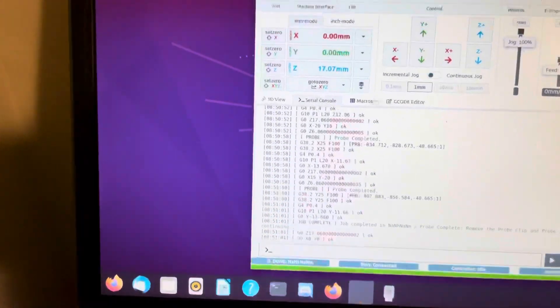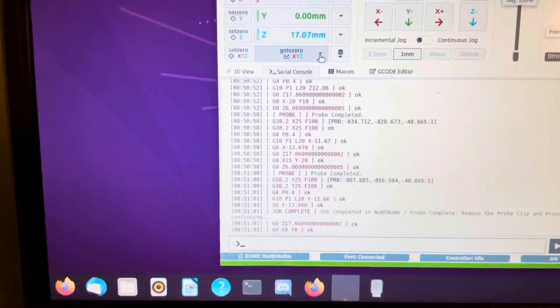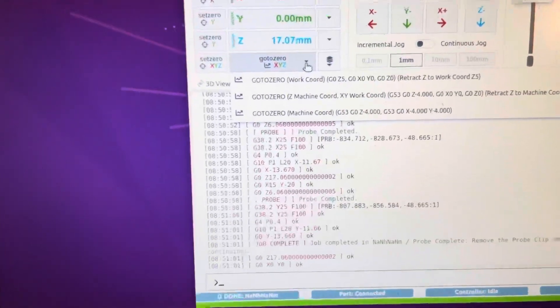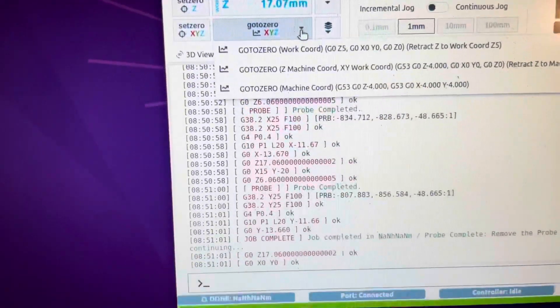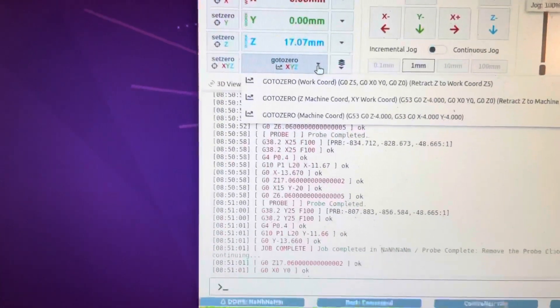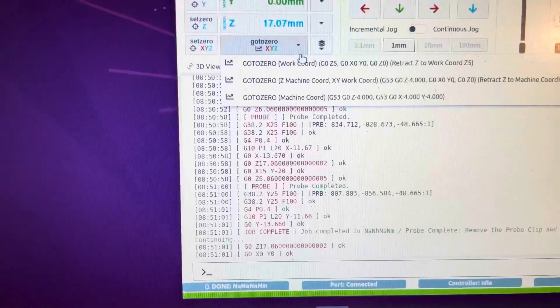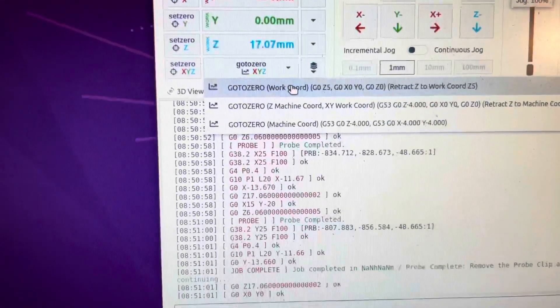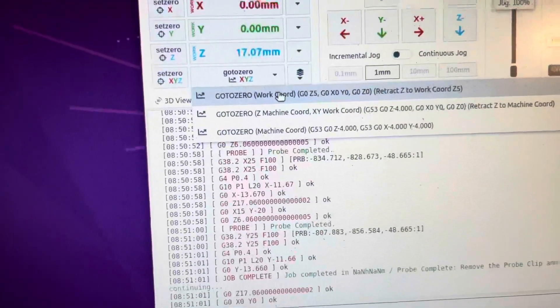we go to Zero. The first line says Work Coordinates. That's what we just did - we set up the work piece. Everything else is the X Y zeros.